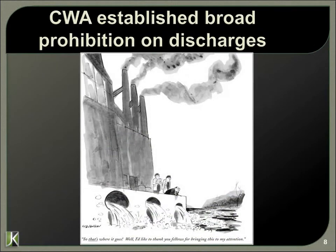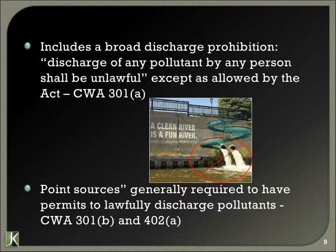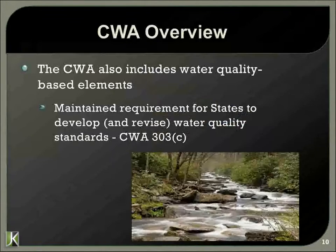The CWA prohibits discharge except in compliance with a permit, and it creates the National Pollutant Discharge Elimination System — NPDES. It establishes the NPDES permitting system for the discharge of pollutants from point sources. If you're channeling and conveying water and you've got a point source, you know exactly where it's going and you know what's in your discharge — or at least hopefully you should.